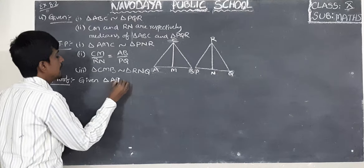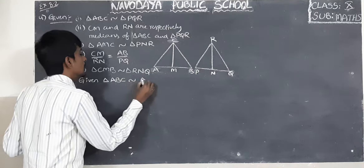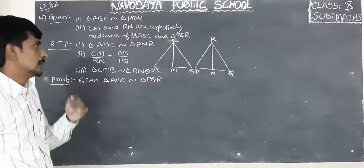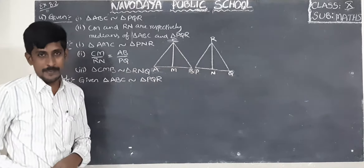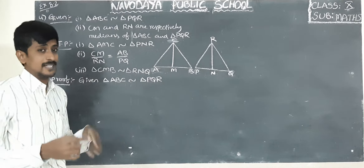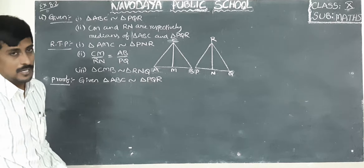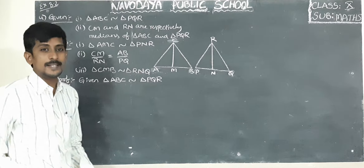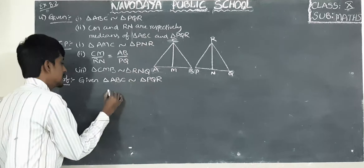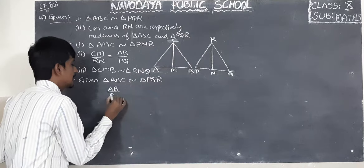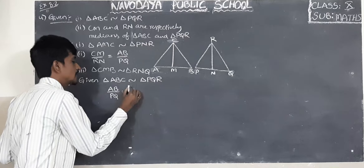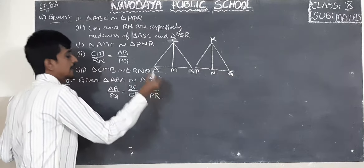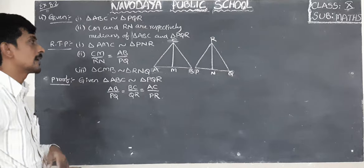Since triangle ABC is similar to triangle PQR, these two triangles are similar, meaning corresponding sides are in the same ratio. That is, AB by PQ equals BC by QR equals AC by PR.